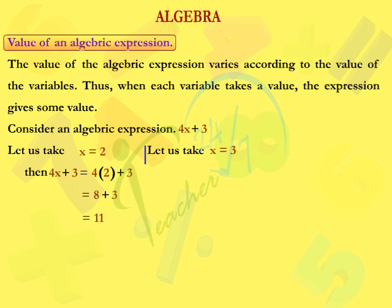Let us take x is equal to 3. Then, 4x plus 3 is equal to 4 into 3 plus 3, which is equal to 12 plus 3, which is equal to 15.